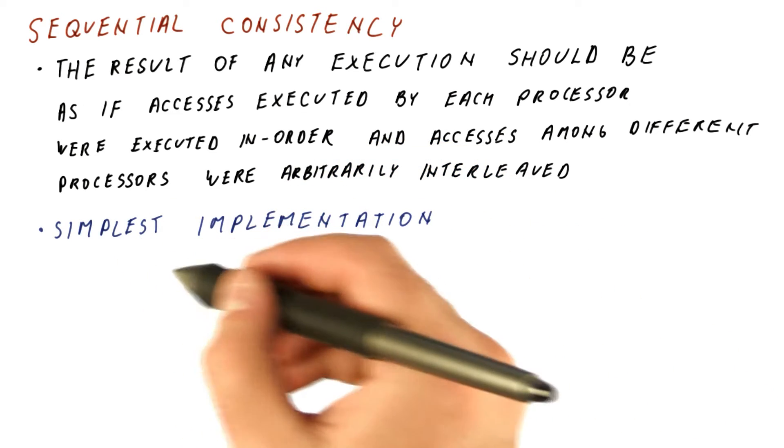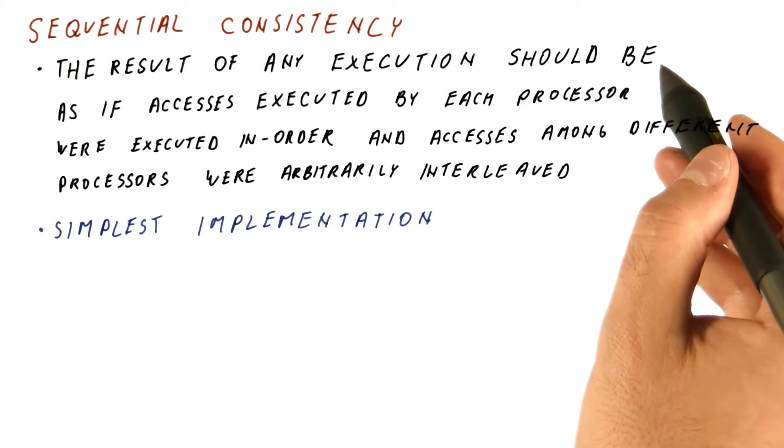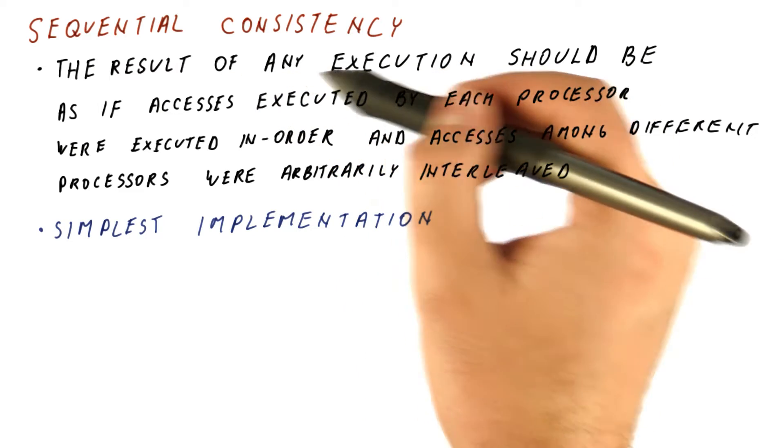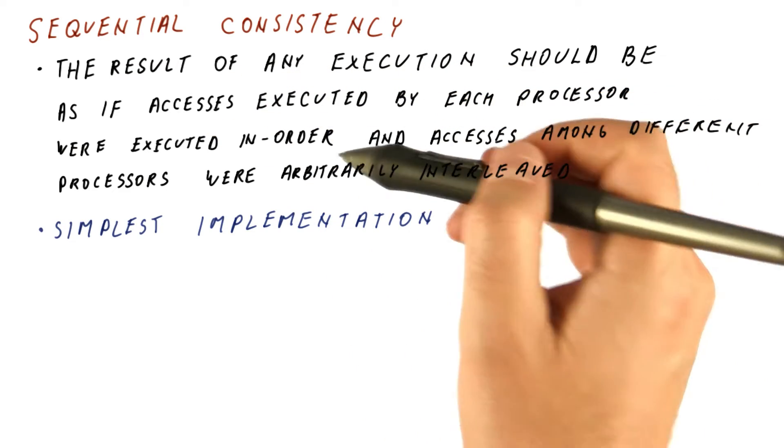The simplest implementation of sequential consistency is one where we remove the should be as if. So pretty much any execution proceeds by executing accesses from each processor in order.